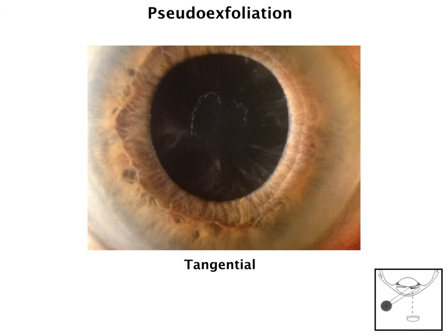Here's one of the more difficult anterior chamber photos to get, and that's pseudo-exfoliation. One of the only ways to get that is with a high-intensity diffuse tangential illumination.